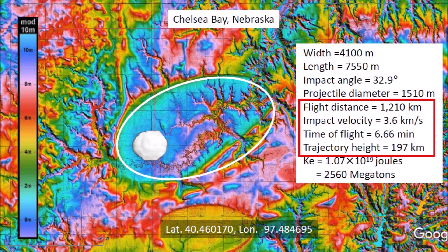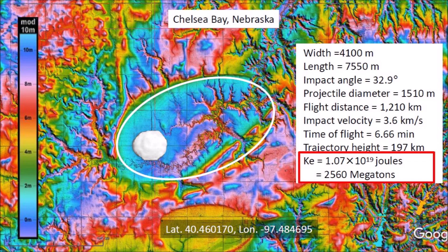Chelsea Bay is located 1,210 kilometers from Saginaw Bay, which is assumed to be the point from which the ice pieces were launched. Using ballistic equations, we calculate that the impact velocity was 3.6 kilometers per second, the time of flight was 6.66 minutes, and the trajectory height was 197 kilometers above the surface of the earth. This is a suborbital spaceflight in the vacuum of space.